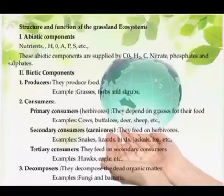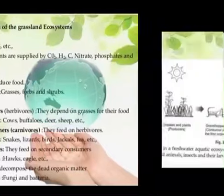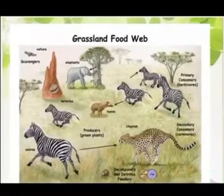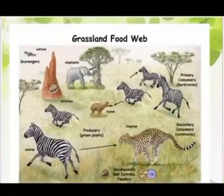Then come the decomposers. The microbes active in the decay of dead organic matter are fungi such as species of Mucor, Aspergillus, Penicillium, Rhizopus, and Fusarium, along with some bacteria and actinomycetes. They bring minerals back to the soil, making them available to the producers. Here you can see a food chain and food web in a grassland ecosystem.